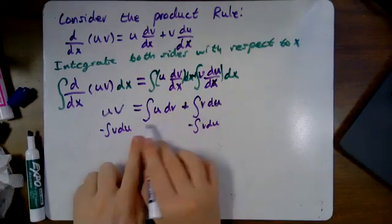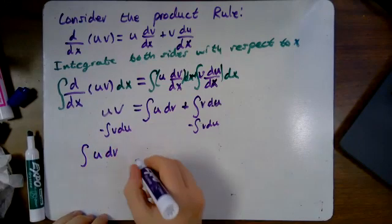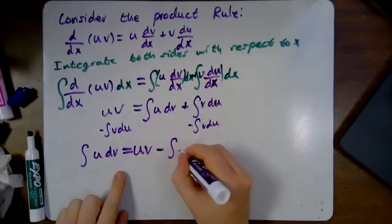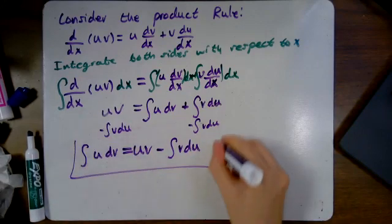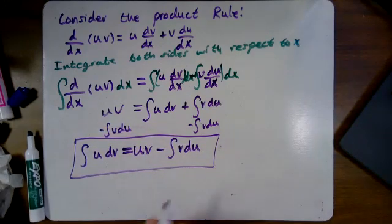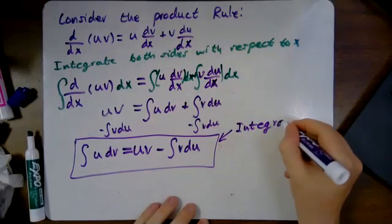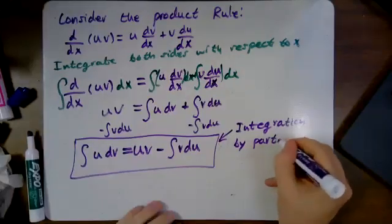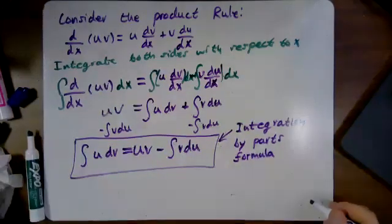If we subtract the integral of v·du from both sides, one side becomes the integral of u·dv, and it equals u·v minus the integral of v·du. This formula is very useful and has the special name: integration by parts.